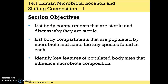For this section, we want to be able to list the body compartments that are sterile and discuss why they're sterile. We should also be able to list the body compartments that are populated by microbiota, name the key species found in each, and identify the key features of populated body sites that influence microbiota composition.